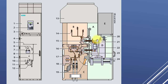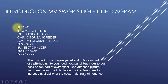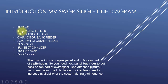Let me discuss the single line diagram technologies for MV switchgear. In MV switchgear we can see there is a bus bar, an incoming feeder, outgoing feeder, capacitor bank feeder, auxiliary transformer feeder, bus risers, bus sectionalizers, bus extension, and bus couplers. The incoming feeder is where power is fed to the switchgear — for example, if 11 kV is connected to the 11 kV side of a power transformer or a generator feeding the MV switchgear.